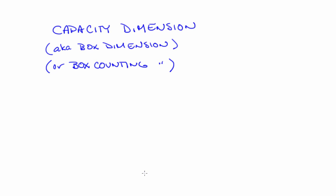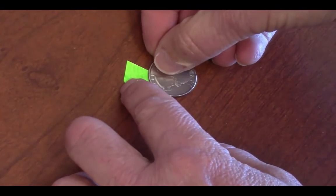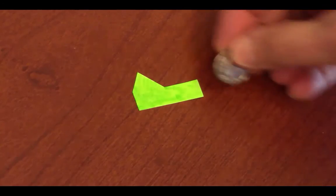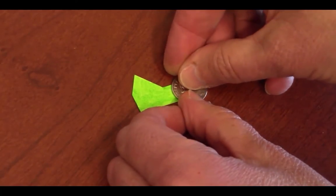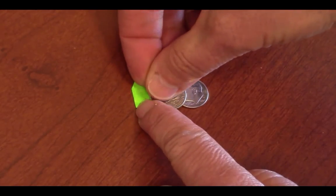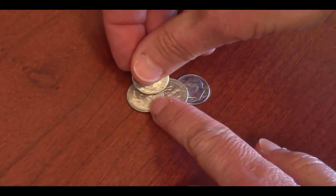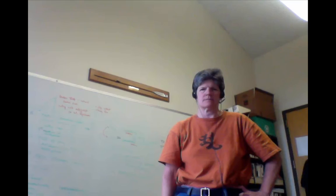Here's the formula. The idea here is that you take your object, you cover it with balls of radius epsilon, and you see how many it takes to do that. That's the n of epsilon in the top of this formula. The epsilon is the size, and then you take the limit of the ratio of the logs to get the capacity dimension. Here's what I mean by that. Then you change the ball size, see how the number required to cover the object changes. And that's what this definition captures.